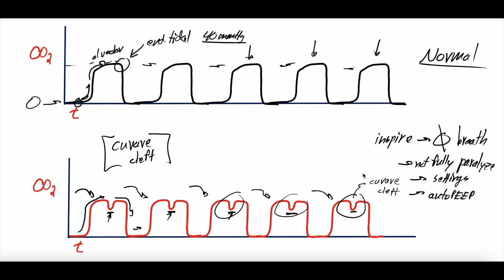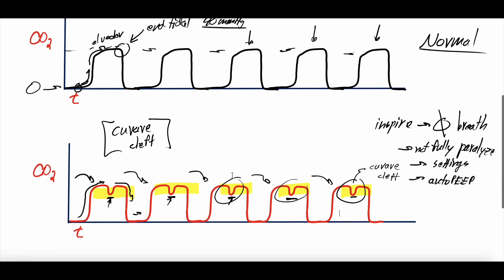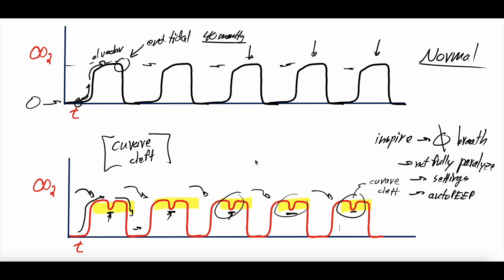All these things need to be thought about and adjusted, because the Curare Cleft can lead to ventilator dyssynchrony and slower liberation from the ventilator. So if you ever see this Curare Cleft on an end-tidal capnographic waveform, it's something not to ignore. Also note — the divot doesn't have to appear in the same position each breath; it can appear early, middle, or anywhere within the exhalatory phase, because it depends on exactly when the patient decides to attempt an inspiratory effort.